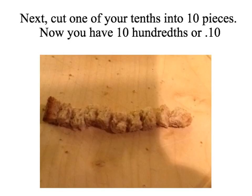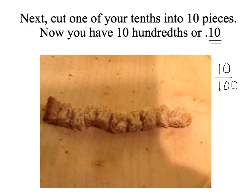It gets a little trickier here. Take one of your tenths and cut it into 10 pieces. Now you have 10 hundredths. And the way you know that those would be hundredths is: if you took each of those 10 and cut them into 10 pieces — which I'm not asking you to do, just one — you would have a total of 100 of those little pieces. And if you put them all back together, you'd have that whole piece of bread again.